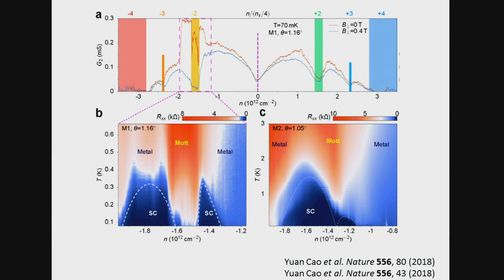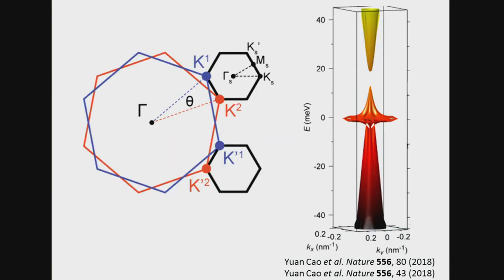The natural first step is to understand what kind of Wannier states we can write down for these four bands, then think about what insulating many-body states they generate. This talk is about that first part. It turns out the Wannier states are highly non-trivial, and there is debate about exactly how to construct them. At this point the talk has nothing to do with strong correlations, although it is motivated by understanding the strongly correlated behavior.